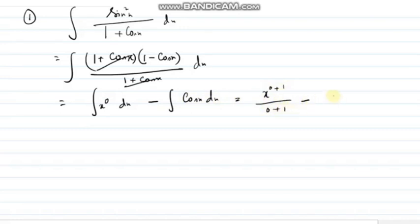x to the power 0, formula will be x to the power 0 plus 1, divide by 0 plus 1 minus sin x plus c. I have discussed why we have to add that c. x to the power 0 plus 1, x to the power 1, 0 plus 1, x minus sin x plus c. First one. Second one.